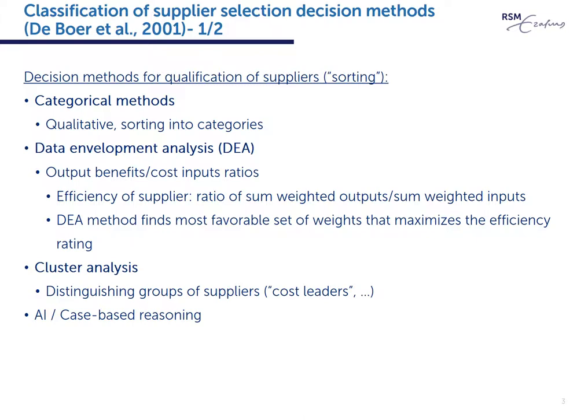Data envelopment analysis techniques calculate for each supplier the ratio between outputs, for instance quality, versus input, for instance price, but also indirect costs. DEA is helpful to distinguish efficient versus inefficient suppliers. Cluster analysis is similar to data envelopment analysis in that it groups suppliers, but it does so on actual similarities between different suppliers. For instance, the results could show three clusters: one of high quality suppliers, another of low cost suppliers, and a third of highly innovative suppliers.